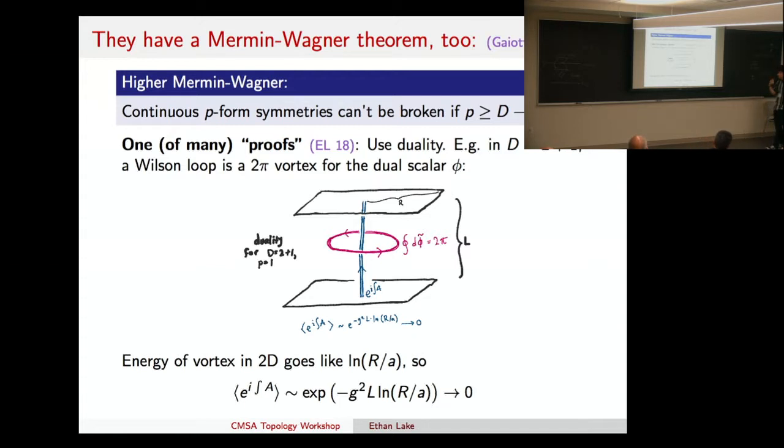The insertion of the Wilson line becomes a 2π vortex for the scalar. Then, if I want to ask what the value of this Wilson line is, well, it has the coupling, it has the length of the line, and then the energy of a 2π vortex for a scalar in two dimensions has this logarithmic divergence. So, I just insert that in there. Here, R is the size of the slab. And I see that when I take the slab, I take the thermodynamic limit, this goes to zero. So, basically saying that you can't have a non-zero vev for this thing.